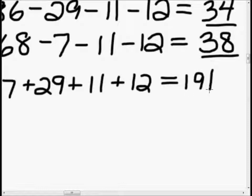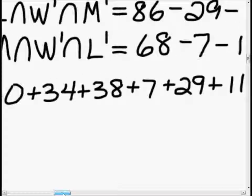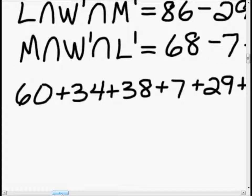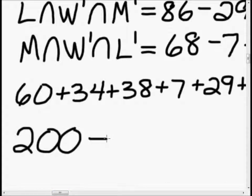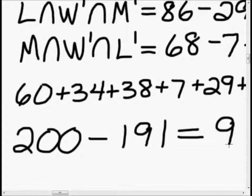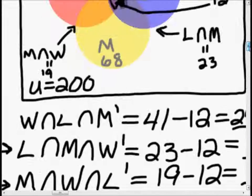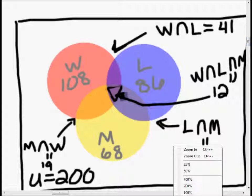That 191 represents all the people who are either in the west, or in a large city, or married, or any combination of the above — and we are ensuring we're only counting everybody once. Now to find the complement, we subtract that number from the universe: 200 minus 191 gives us our answer of 9. That is the number of people who are not married, not in the west, and not in a large city.